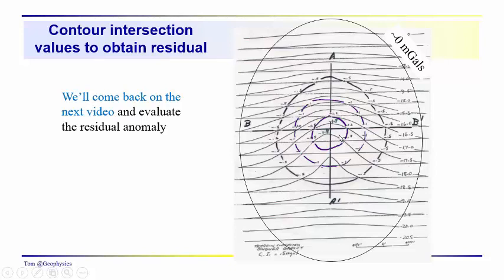The anomaly is also negative, so we know that the object producing this anomaly has a negative, relative negative density compared to the surrounding strata.